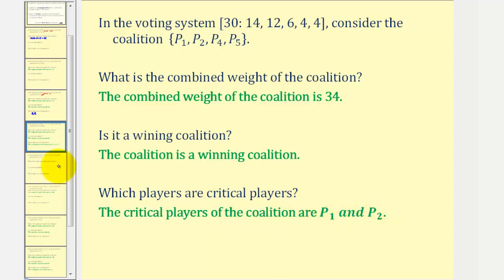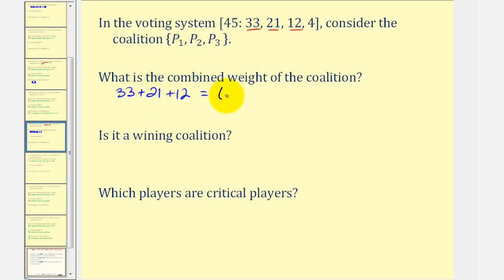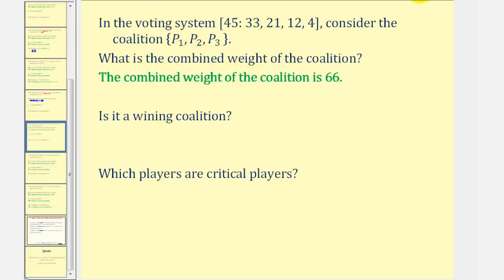Let's take a look at a second example. Here we have a different weighted voting system and a different coalition. Our coalition now is player one, player two, and player three, that have a combined weight of thirty-three plus twenty-one plus twelve, which equals sixty-six. Sixty-six is greater than or equal to the quota of forty-five, and therefore we do have a winning coalition.